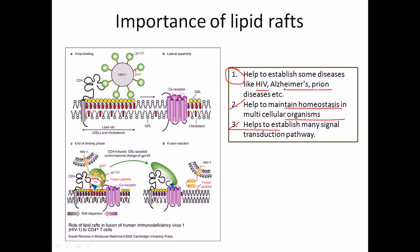That is how HIV genetic material starts to go inside the cell, eventually taking hold of the whole cell. That is an example of how lipid rafts help establish HIV-1 disease. Lipid rafts also help establish Alzheimer's and prion diseases. In modern understanding, we need to study lipid rafts in much greater detail to prevent these kinds of diseases.